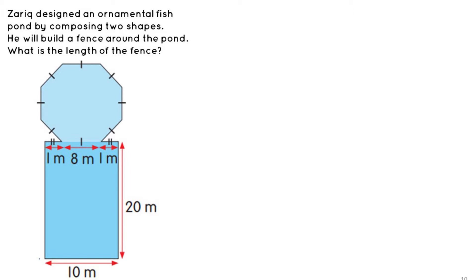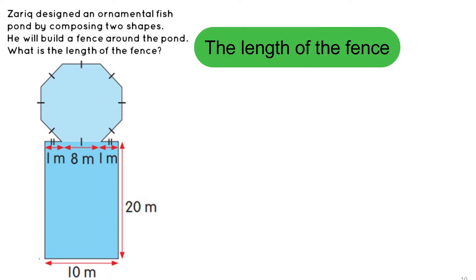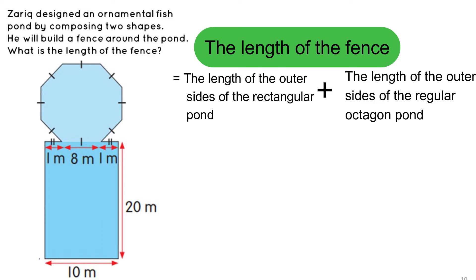We have to find the length of the fence around the pond. First, mark the length of the outer sides of the pond, then add the length of all outer sides to find the length of the fence. To solve: the length of the fence equals the length of the outer sides of the rectangle pond plus the length of the outer sides of the regular octagon pond.